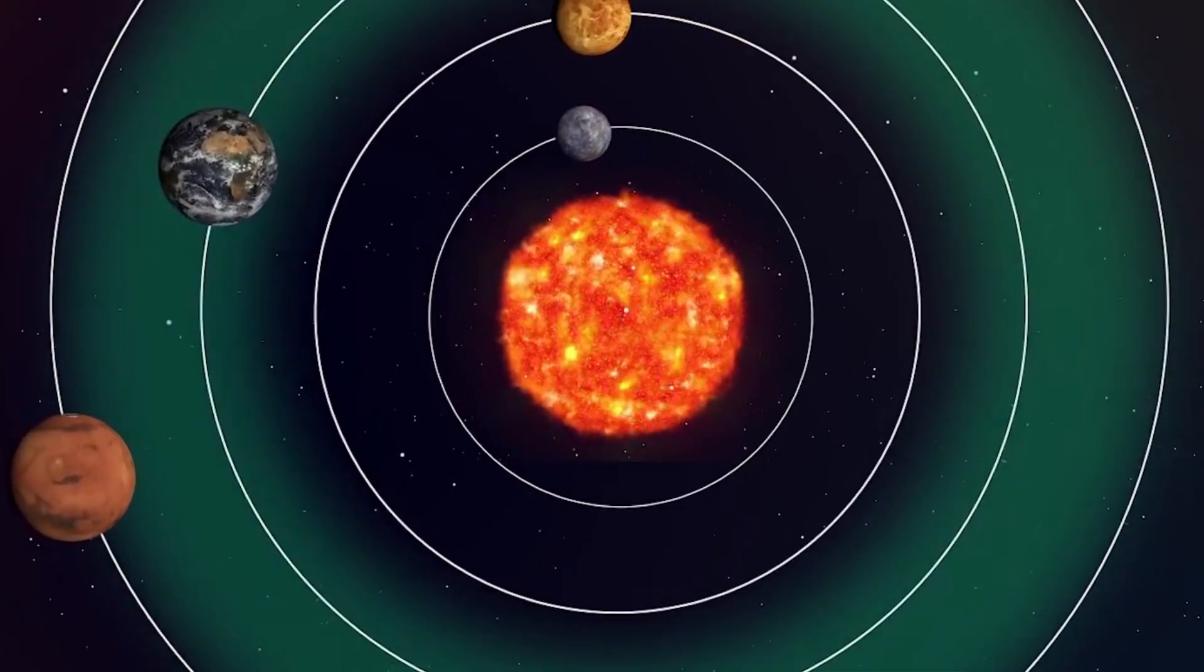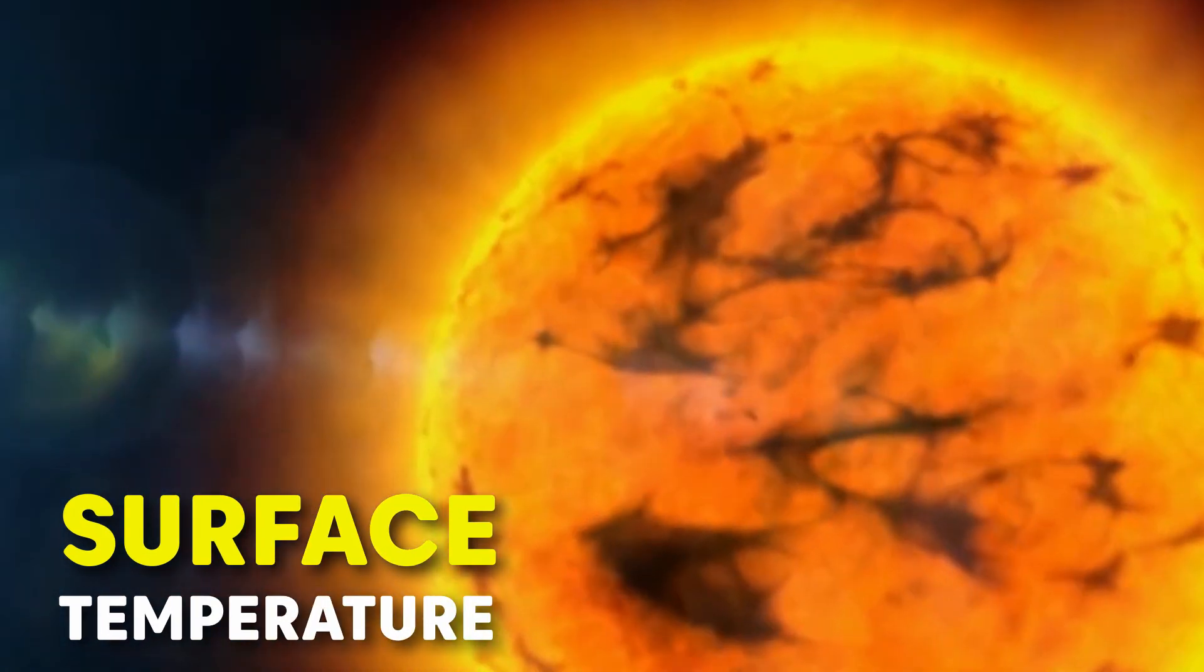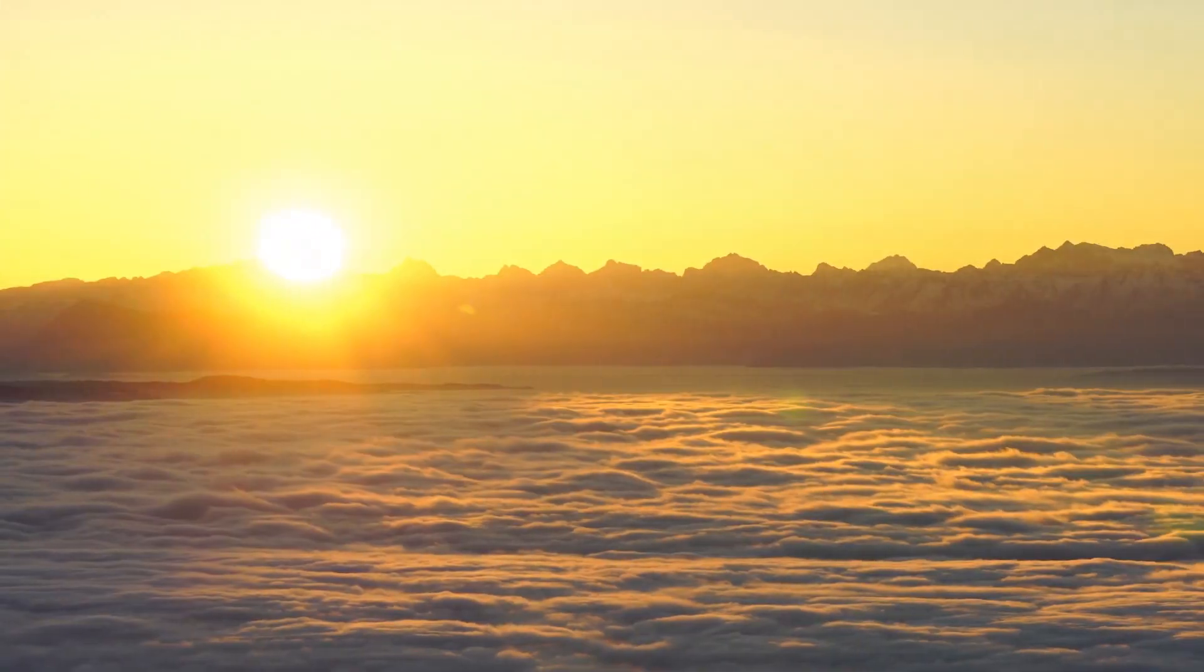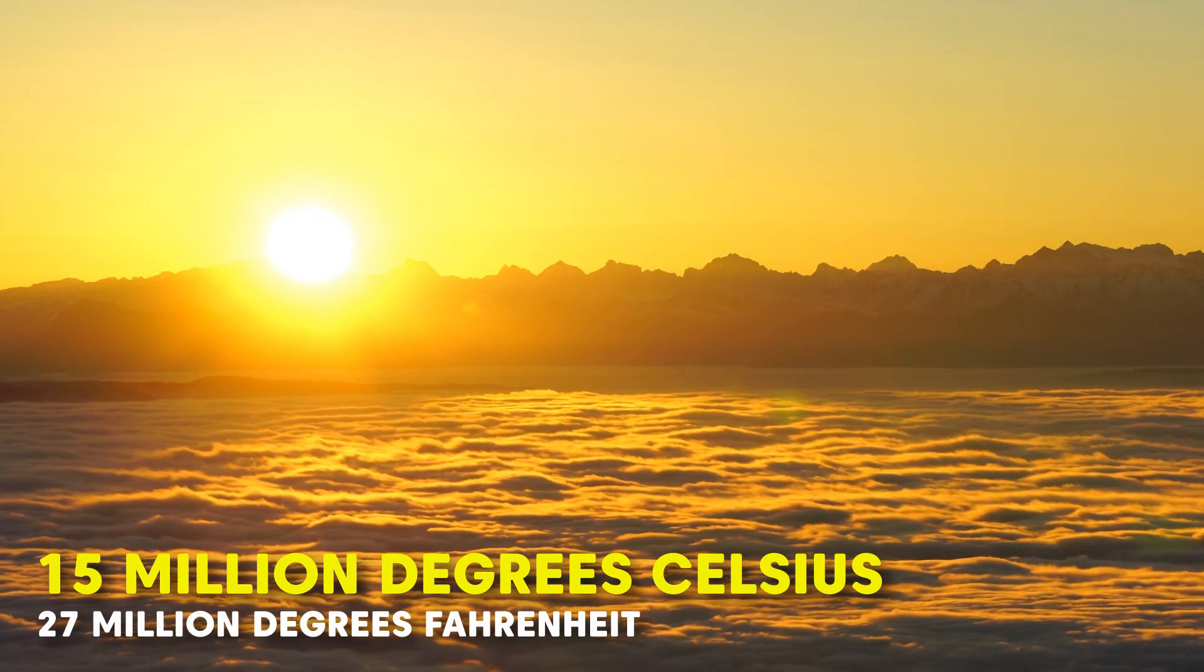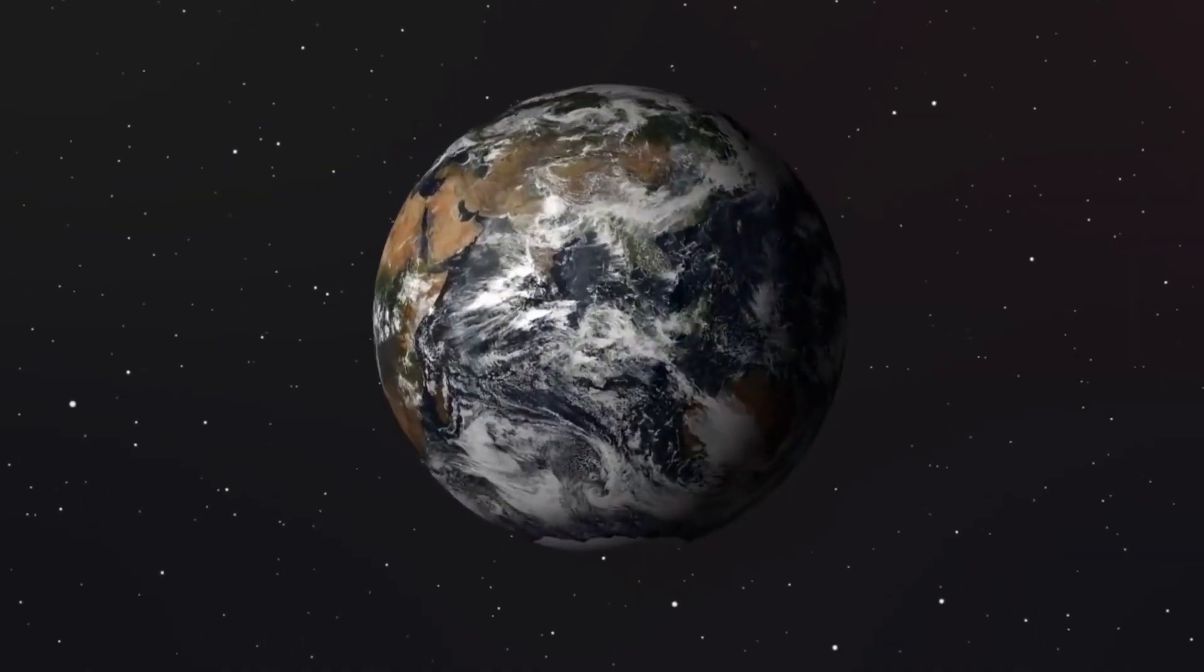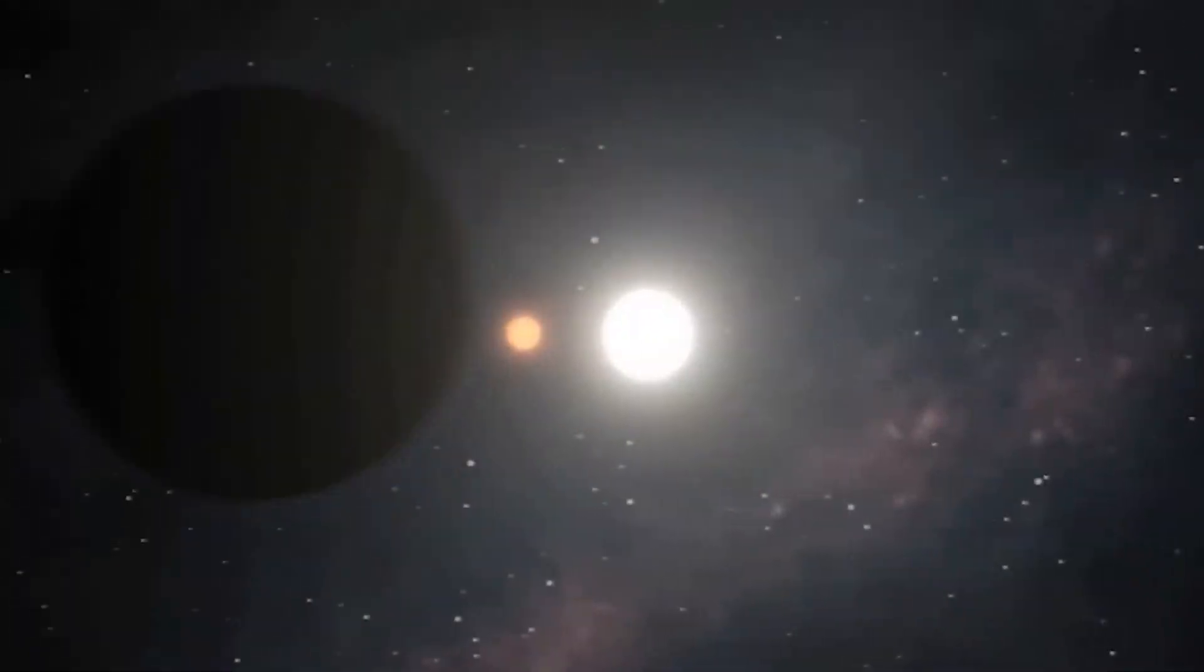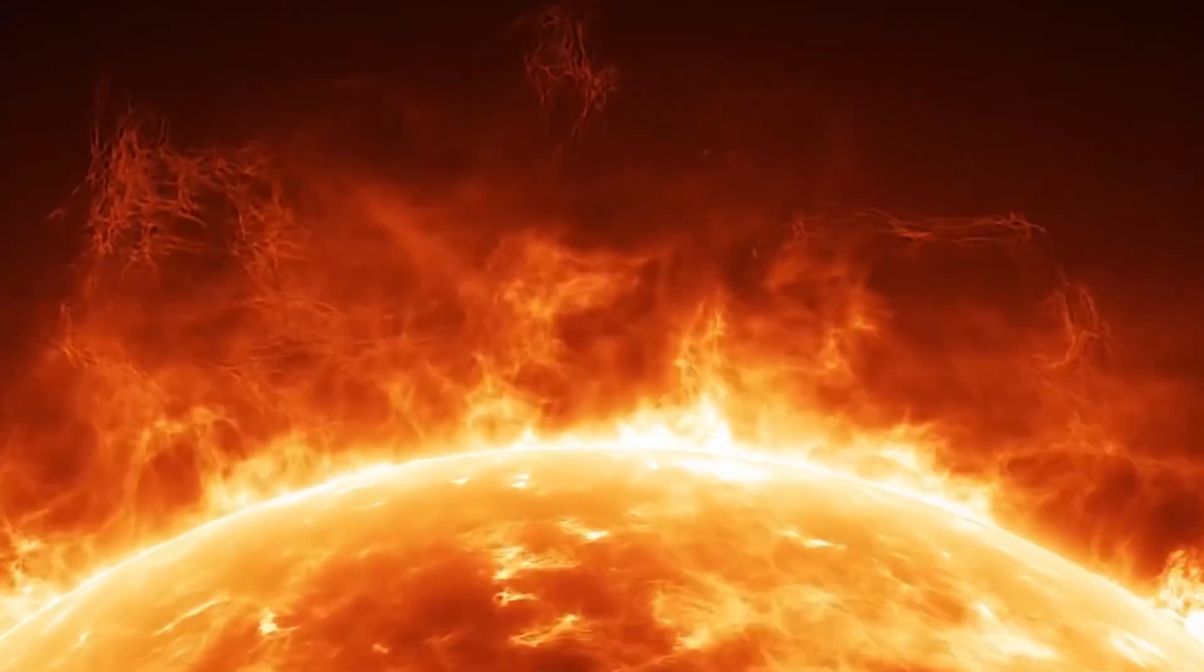The surface temperature: Earth's temperature would undergo a drastic change as well. The Sun's core temperature is approximately 15 million degrees Celsius or 27 million degrees Fahrenheit, while Earth's average surface temperature is around 15 degrees Celsius or 59 degrees Fahrenheit. With Earth's transformation, our planet would become a blazing inferno, matching the Sun's scorching heat. All forms of life as we know them would cease to exist.